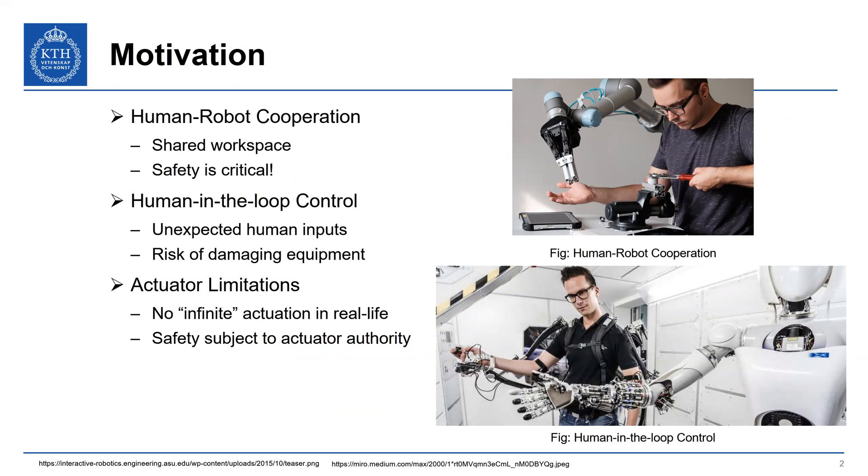It could have some input that causes damage to the equipment or possibly harming other humans in the process. So we want to ensure safety in this kind of scenario but we also acknowledge real life limitations of Euler-Lagrange systems in that there is no infinite actuation in real life. So we want to ensure safety of the system subject to actuator authority.